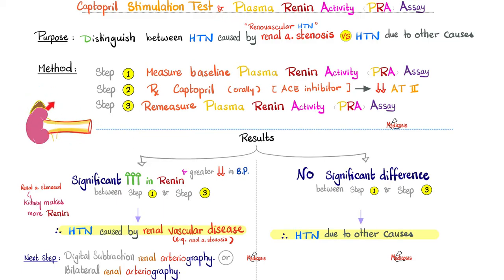Why? Because this kidney was already struggling before the test — it was already releasing excess renin. When you lower angiotensin 2 with captopril, renin gets even more elevated, because the purpose of renin is to raise angiotensin 2. The afflicted kidney shouts out even more renin since it was struggling in the first place. But if hypertension was not caused by renal artery stenosis, there is no significant difference between step 1 and step 3.